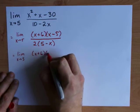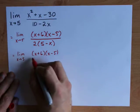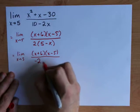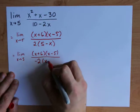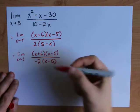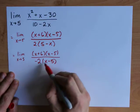x approaches 5. That's x plus 6, x minus 5. I'm going to have factored an extra negative out. So my negative x becomes positive x and my positive 5 becomes negative 5. Ah, now the x minus 5's cancel.